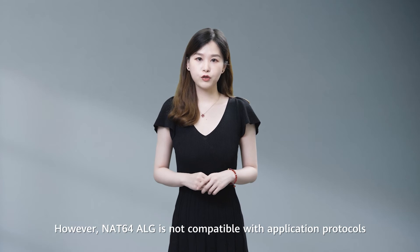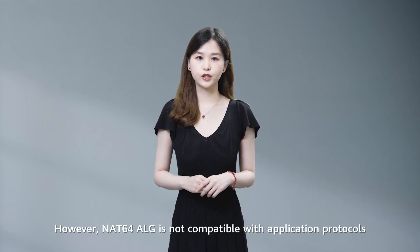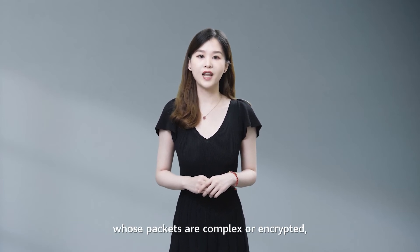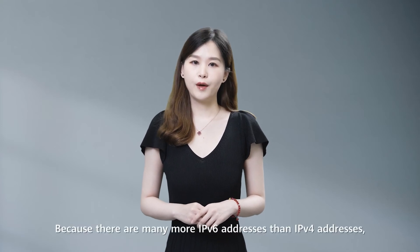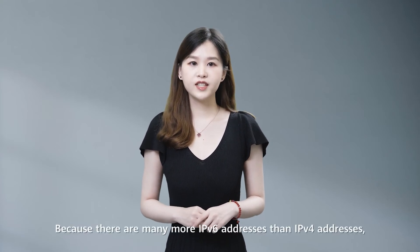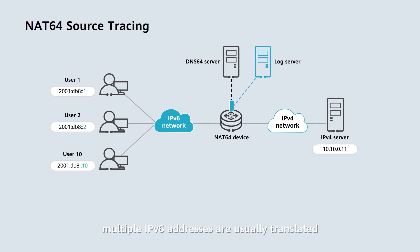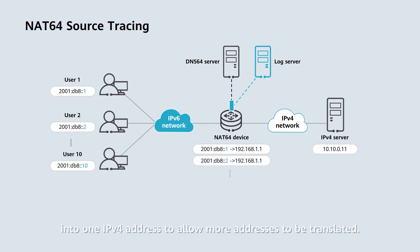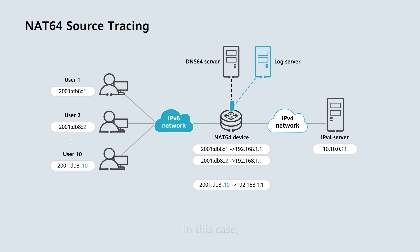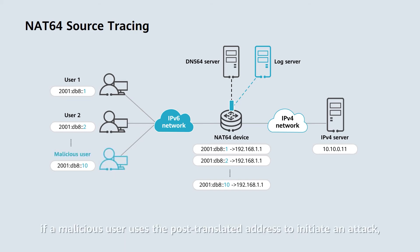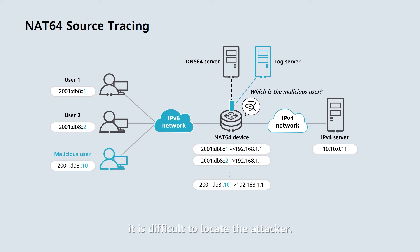However, NAT64ALG is not compatible with application protocols whose packets are complex or encrypted, such as HTTPS. Because there are many more IPv6 addresses than IPv4 addresses, multiple IPv6 addresses are usually translated into one IPv4 address to allow more addresses to be translated. In this case, if a malicious user uses the post-translated address to initiate an attack, it's difficult to locate the attacker.